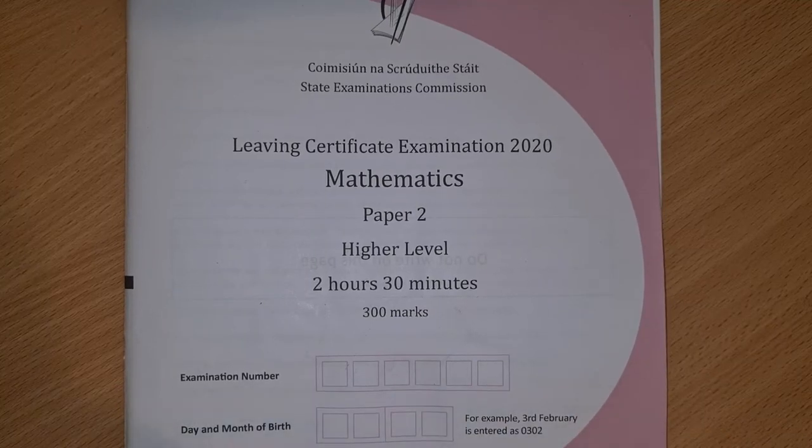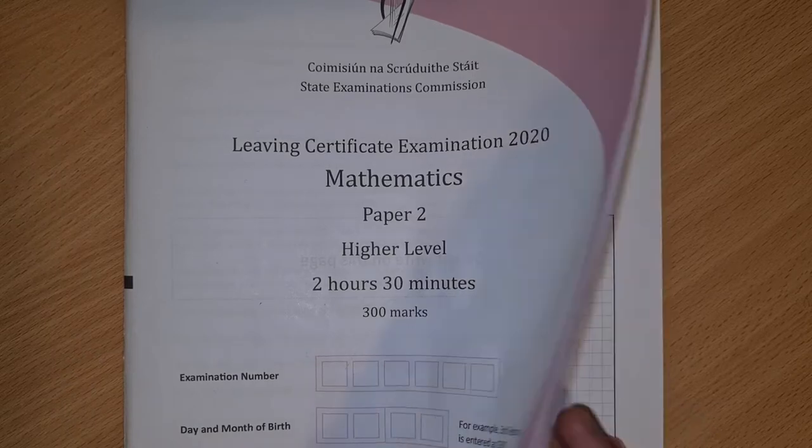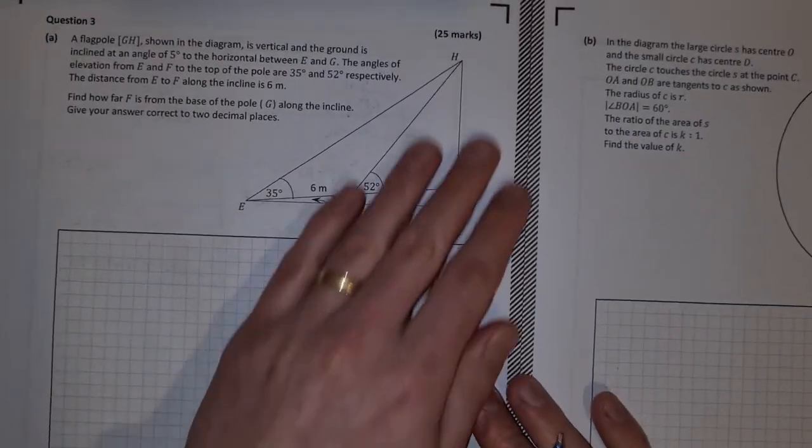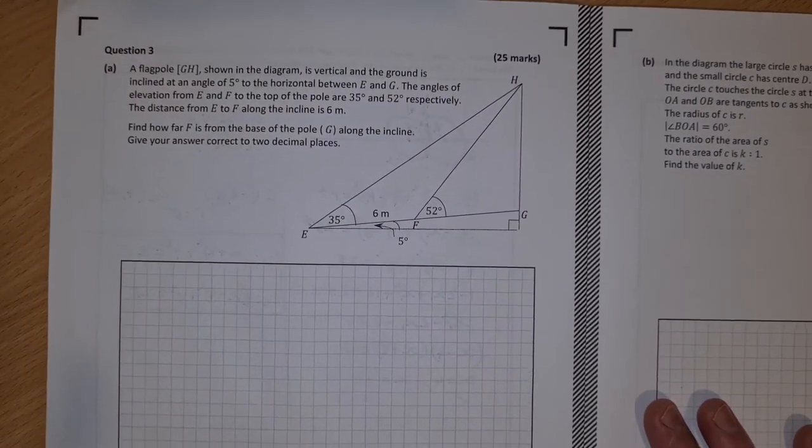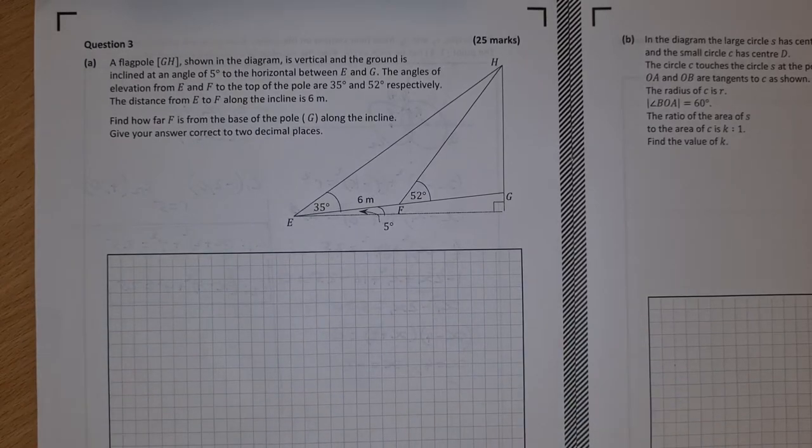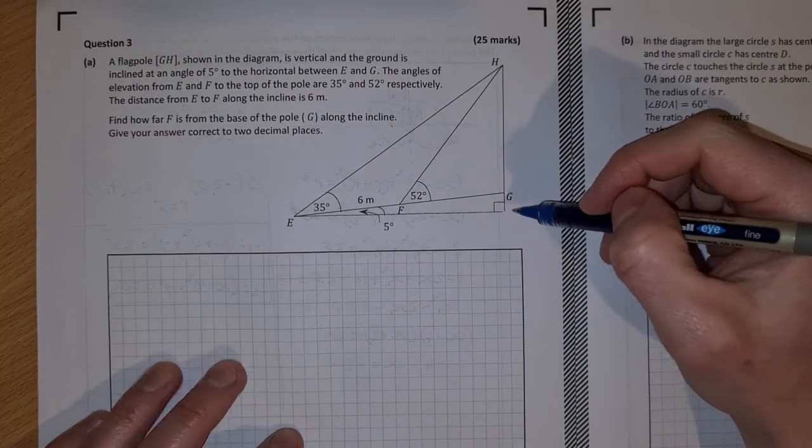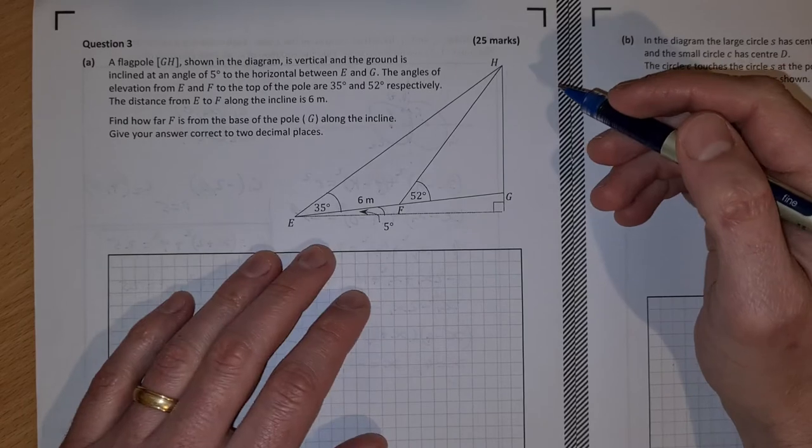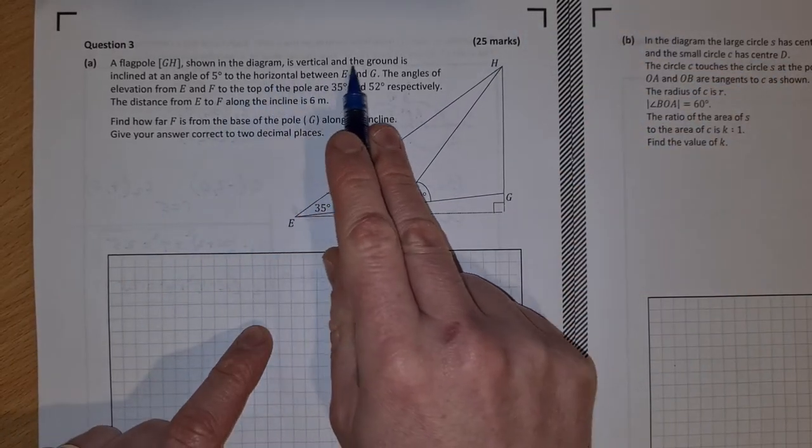Leaving Cert Higher Level Maths 2020 Paper 2, this is the solution video to Question 3. Question 3 is a trigonometry question. We have a flagpole GH, this is the flagpole here shown in the diagram, is vertical and